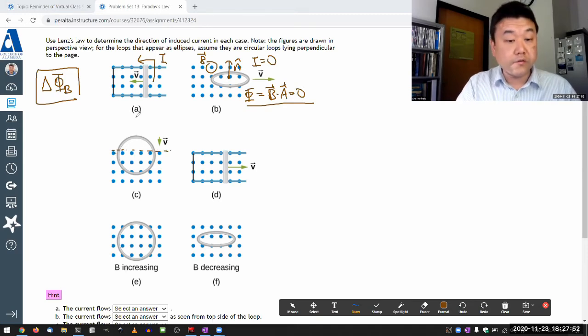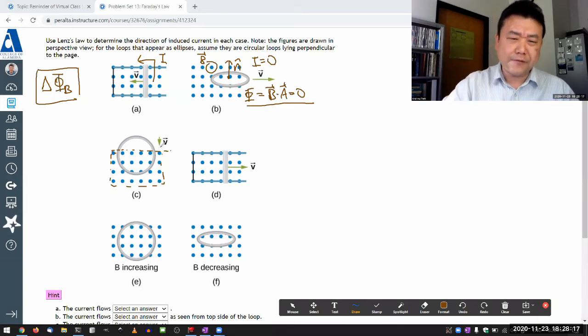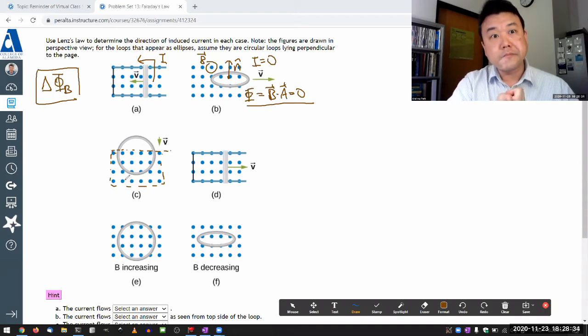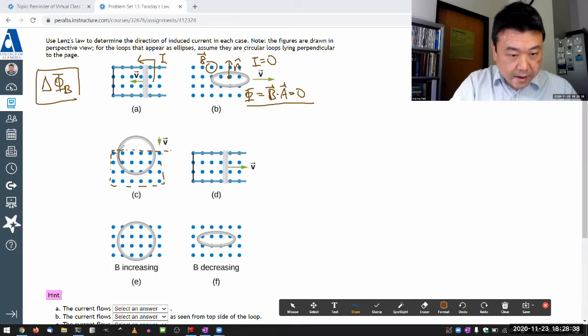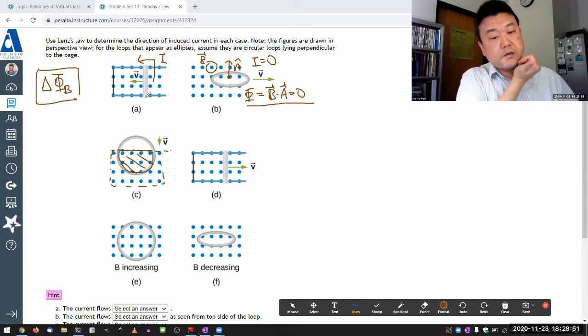You could imagine there's an invisible solenoid here with enough gap for the loop to slip through. However, when the question gives you the magnetic field arrangement, it's giving you a gift of not having to worry about how exactly that field is produced. So what I do see is this loop is entering a region of magnetic field pointing out of the screen. So the effective area that has the magnetic field in it, when I imagine doing the magnetic flux calculation, the area is increasing. It's kind of opposite of what we had in A.